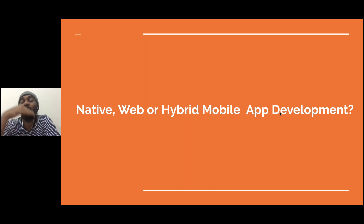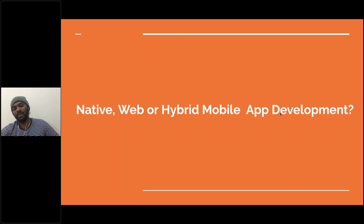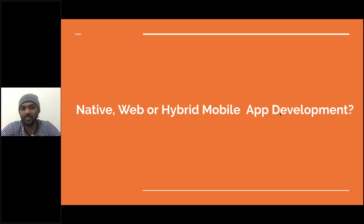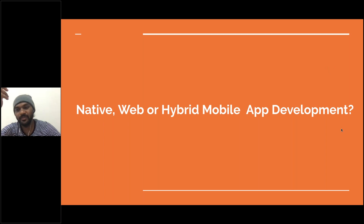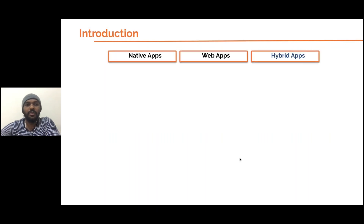Types of mobile applications — a lot of people say I'm using iPhone, I'm using Android, I'm using something else. Whenever people are going to consider what type of application they want to launch, the logic is that it can be native, it can be web, or it can be hybrid mobile apps. So what does native, web, and hybrid mean?